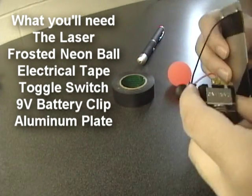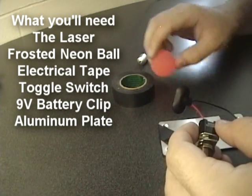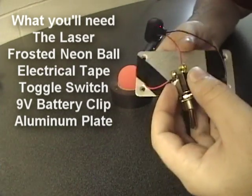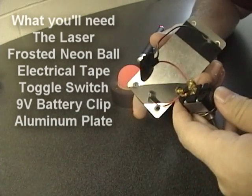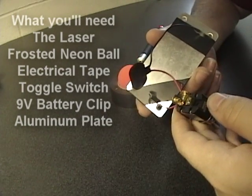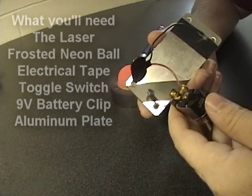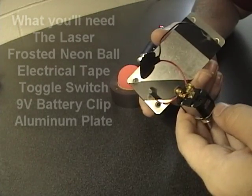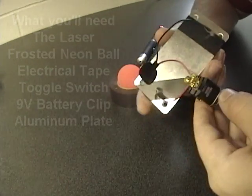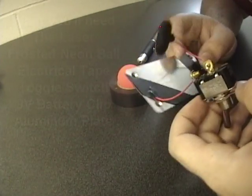What you're going to do with the aluminum plate and toggle switch and battery connectors, you're going to connect them in sort of a circuit like this. With one end connected to the toggle switch, one end connected to the battery clip, and just kind of make a little simple circuit like that.